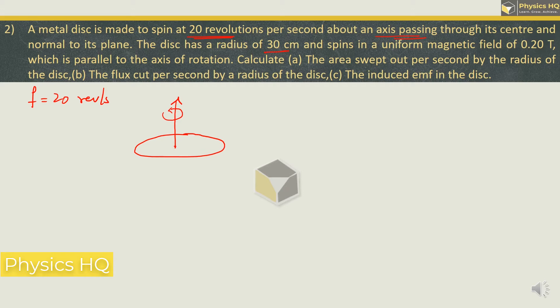The disc has a radius of 30 centimeters. So if I draw a radius from the center, this will be 30 centimeter. And it is spinning in a uniform magnetic field of 0.2 tesla which is parallel to the axis of rotation. So with this axis of rotation there is this magnetic field as well which is parallel to this, and this magnetic field value is 0.2 tesla.